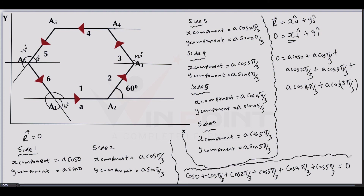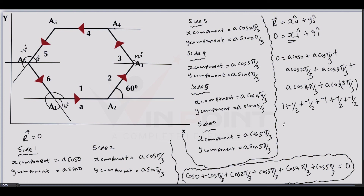To verify using known cosine values: cos0 = 1, cos(π/3) = 1/2, cos(2π/3) = -1/2, cos(3π/3) = -1, cos(4π/3) = -1/2, cos(5π/3) = 1/2. Adding these: 1 + 1/2 - 1/2 - 1 - 1/2 + 1/2 = 0. The halves cancel each other, and 1 and -1 cancel, giving zero. LHS = RHS, hence proved.